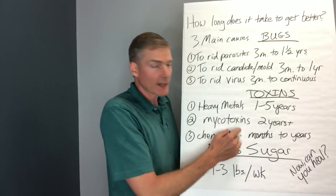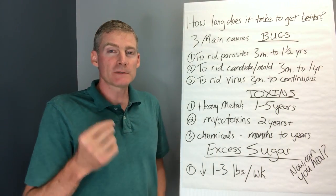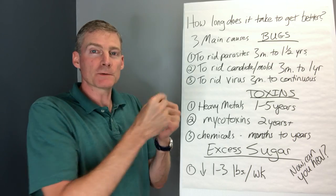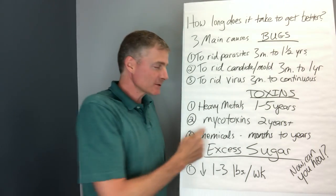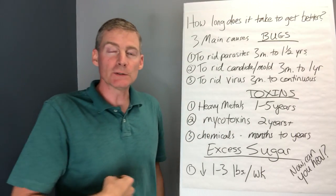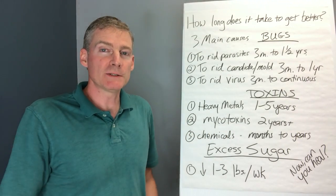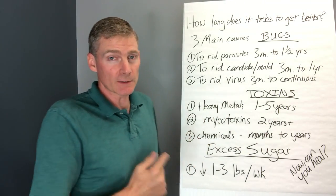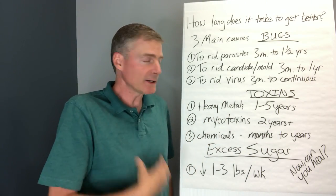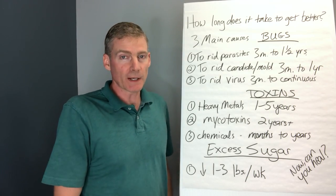And then mycotoxins, that comes from the mold. The mycotoxins sit on the spores and they float through the air. You breathe in the spores and the mycotoxins kill the tissue and then the spores grow on dead tissue. So I'm planning on taking two years at least to get rid of the mycotoxins that I have in my body as measured by blood tests.